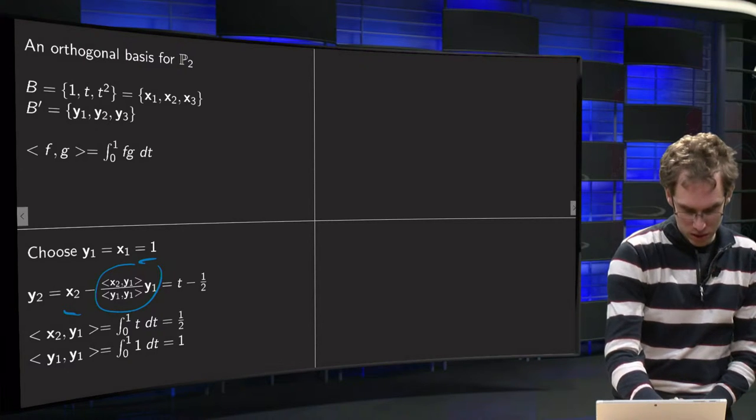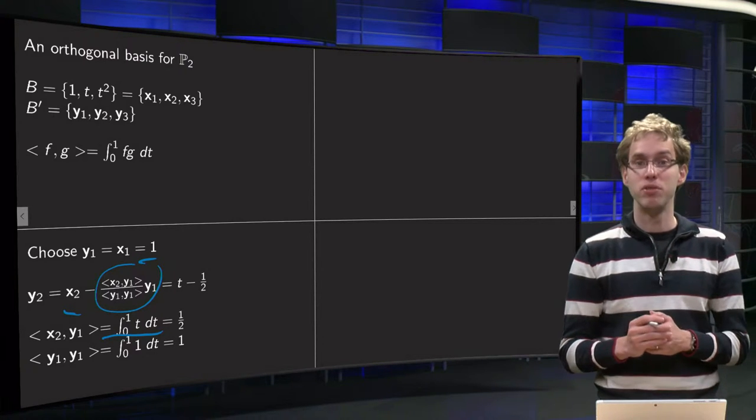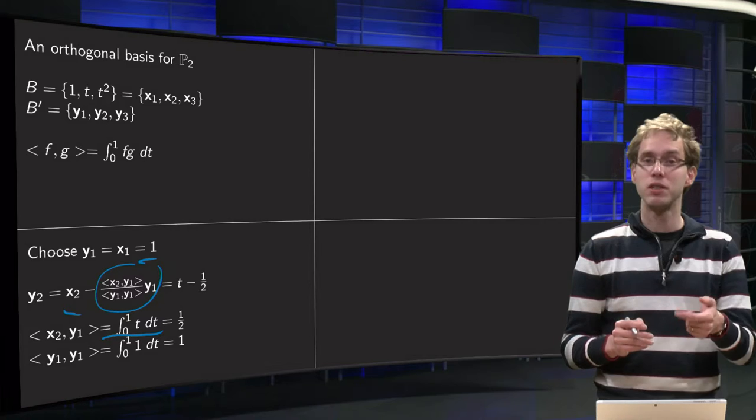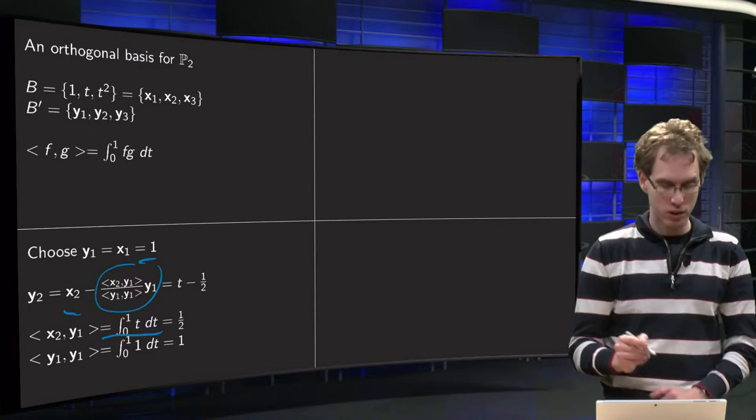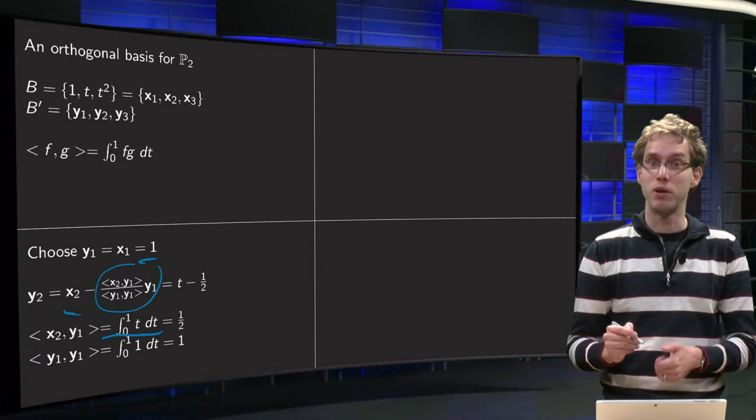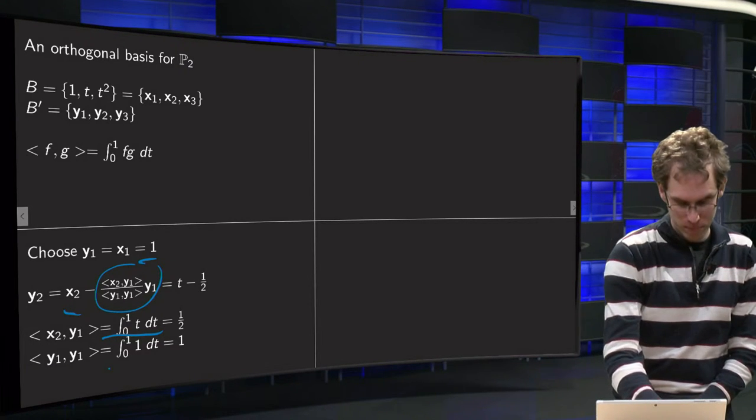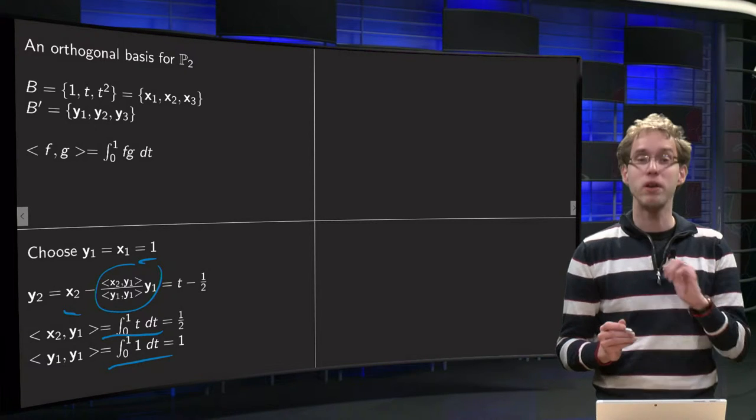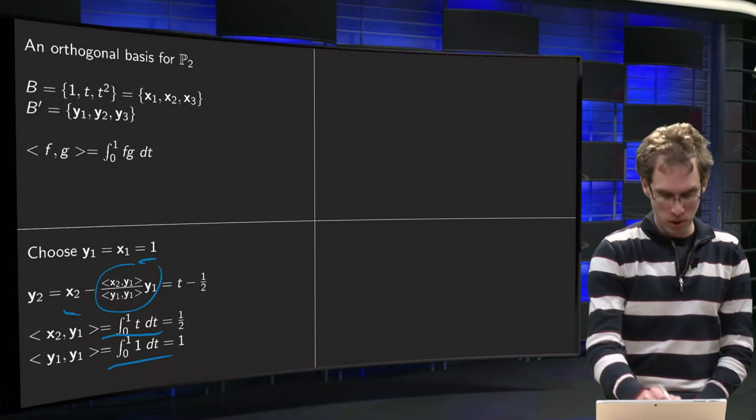Integrate between 0 and 1, one half t squared, between the boundaries yields one half. And we also need inner product y1, y1. y1 was 1, so we need the inner product of 1 times 1. Integrate 1 from 0 to 1, yields t between the boundaries, yields a 1.